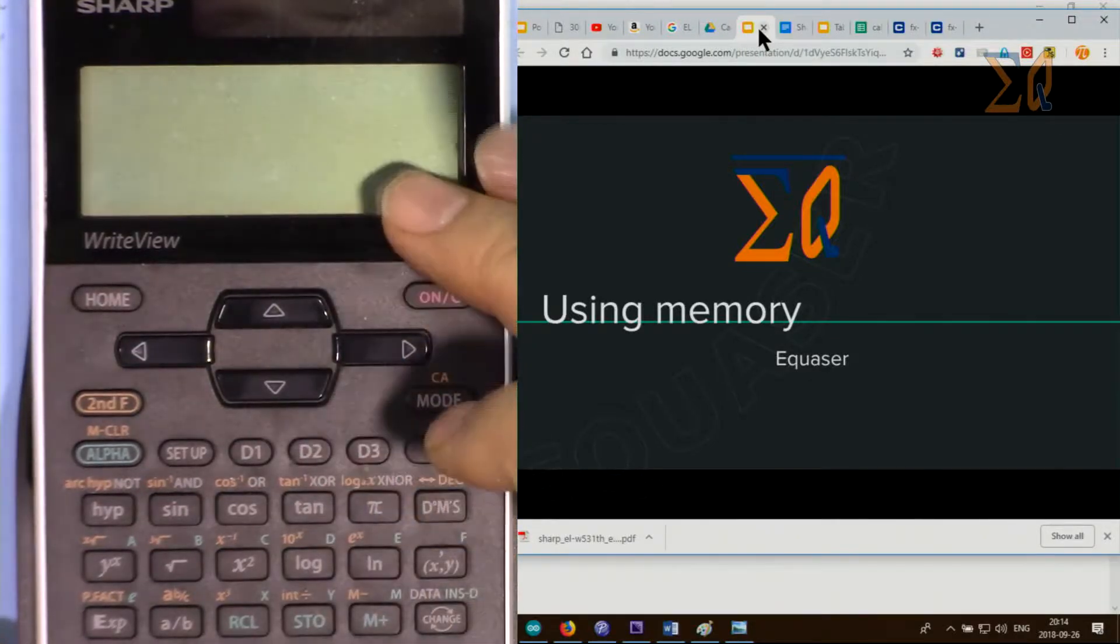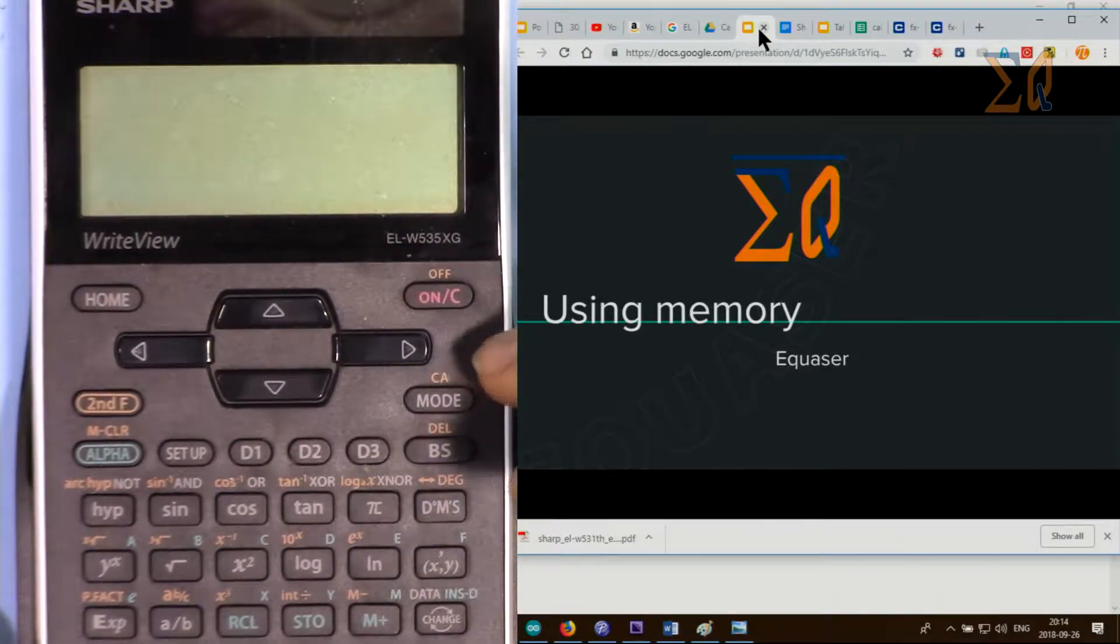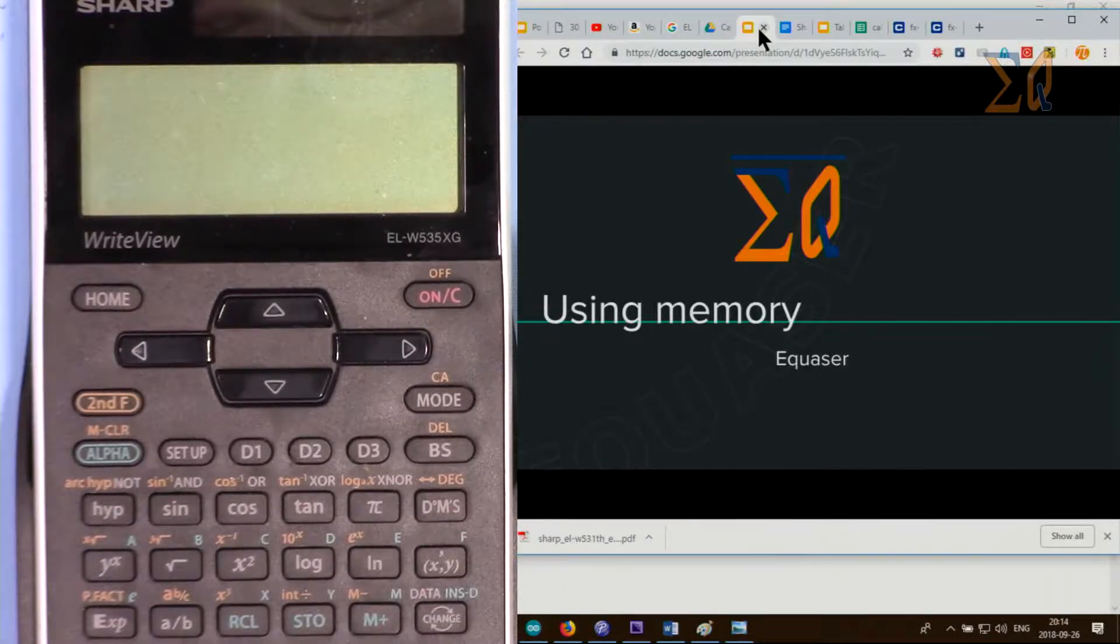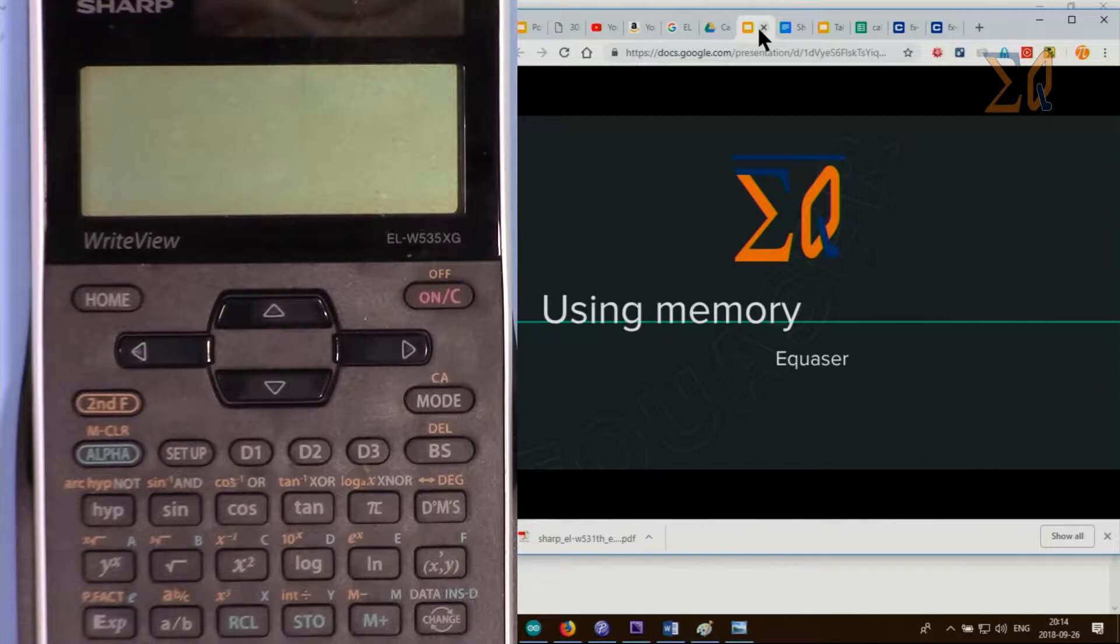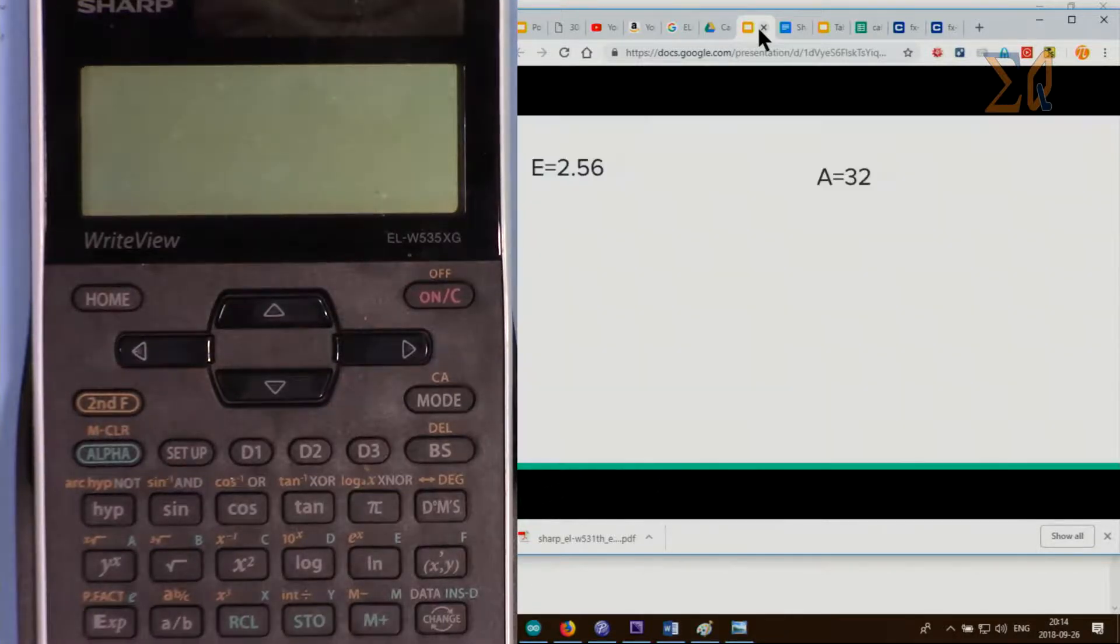In this calculator, we have two types of memory. One is the memory that you store and recall in your calculation, and there is another memory that you can just add on top of it.